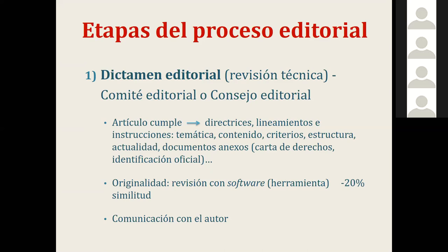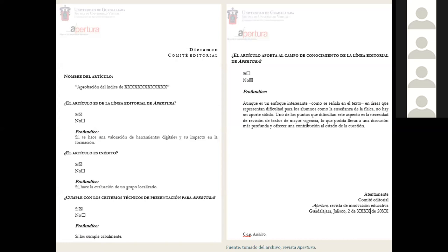Una vez que se tiene el dictamen de originalidad, se establece la primera comunicación con el autor para informarle si su artículo cumple con los requisitos técnicos, de contenido, de estructura y de criterios, si están todas las cartas y si el artículo es original. Se muestra un ejemplo de formato de dictamen editorial —con datos enmascarados para proteger autores y tema— que ilustra cómo puede presentarse esta evaluación.